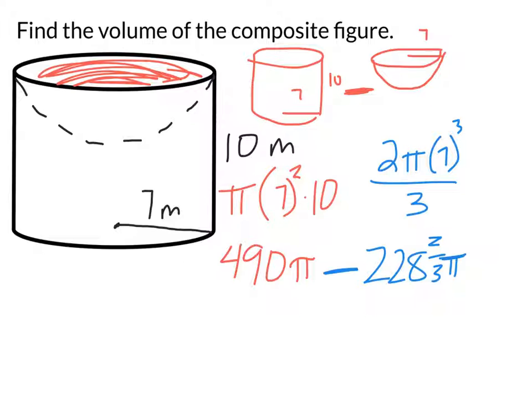And when I subtract this, I get 821 almost even meters cubed with some decimals over there. Okay, so notice there's no pi because I put the pi into my calculator when I did my calculations. And that's what I got.